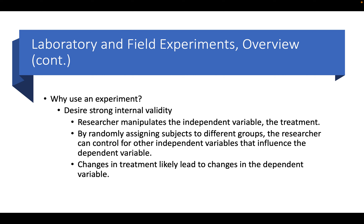Why use an experiment? If our goal is to have strong internal validity, then an experiment is really the way to go, because the researcher can manipulate the independent variable — the treatment — which is not necessarily achievable in other research designs. By randomly assigning subjects to different groups, the researcher can control for all other independent variables that influence the dependent variable, or almost all of them.